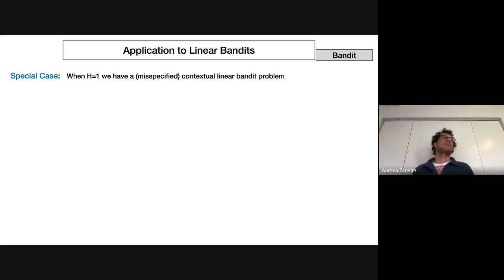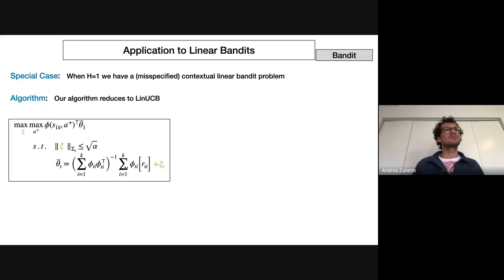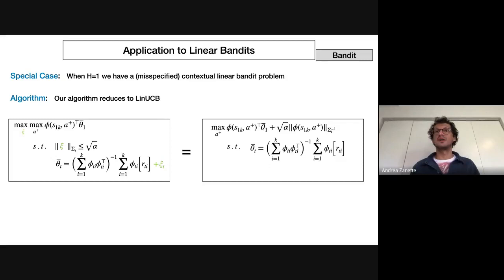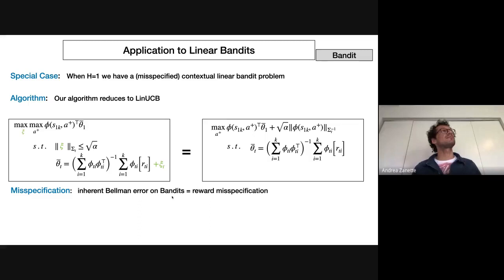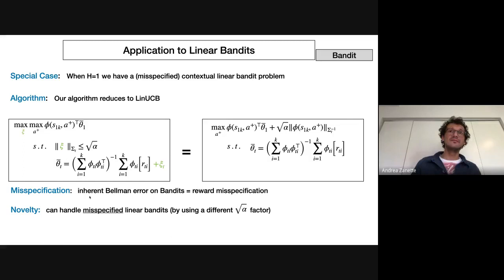You can find an application to linear bandits of this algorithm — or you can see it the other way: the MDP algorithm as an extension of linear UCB to MDPs. If you apply the algorithm with horizon H equal to one, you just have a simple bandit problem. It turns out you can solve the problem in a sort of closed form by maximizing over all actions. This gives the usual exploration bonuses in linear bandits. In that case, the inherent Bellman error becomes the reward misspecification. The novelty that follows as a corollary from the main theorem is that this algorithm, with a different choice of alpha, can handle misspecified contextual linear bandits.